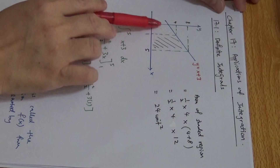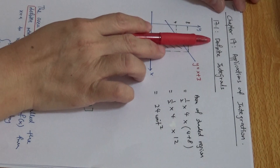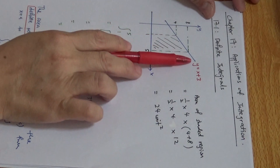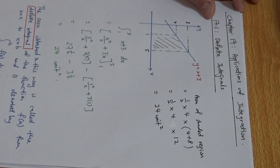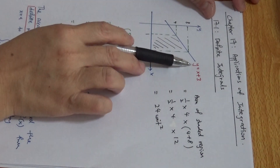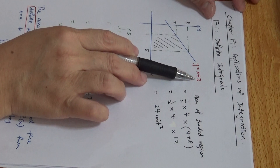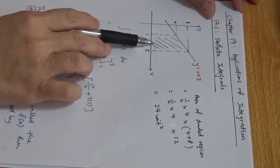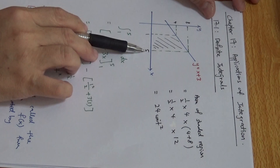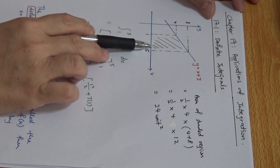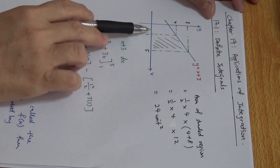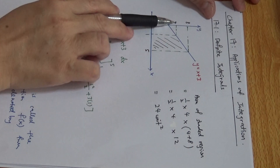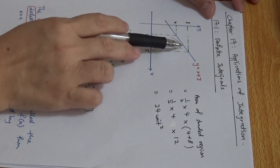I'm going to define what we mean by definite integrals. Can you look at this line? This line is represented by the equation y equals x plus 3. Now if I want to find this shaded region — that means from 1 to 5 — if I get the y-coordinates, I put 1 here, this is 4; I put 5 here, this is 8.